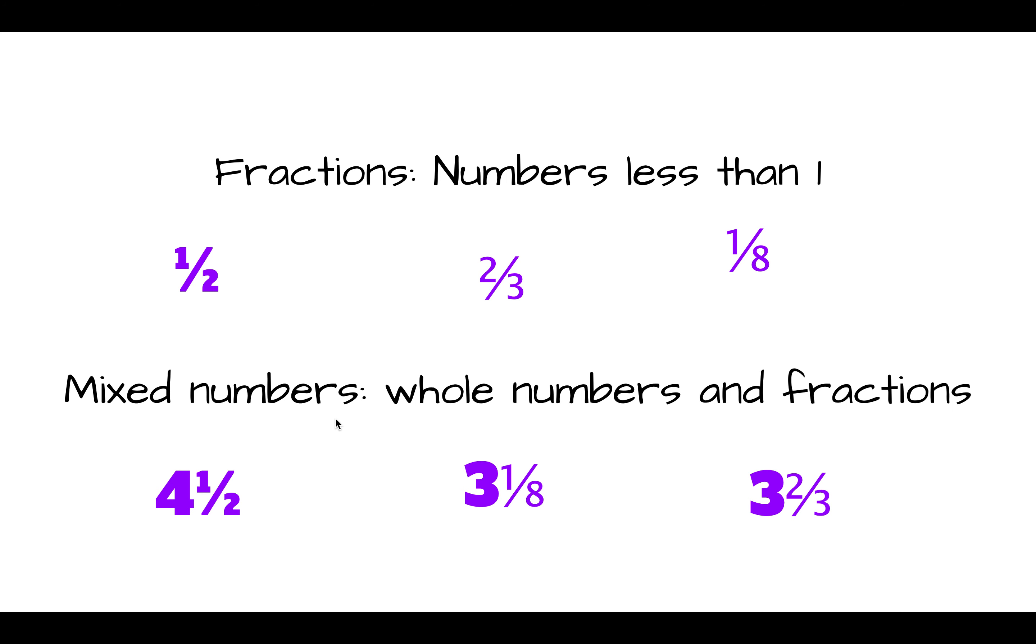Mixed numbers are whole numbers and fractions together. So for example, four and a half, three and one-eighth, or three and two-thirds.